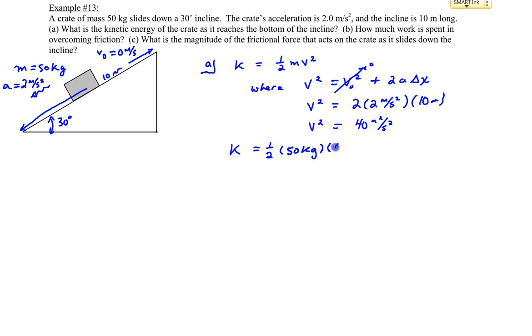times the velocity squared, which is 40 meters squared over second squared. This gives an answer of 1,000 kilograms times meters squared over second squared. That's really a kinetic energy of 1,000 joules.